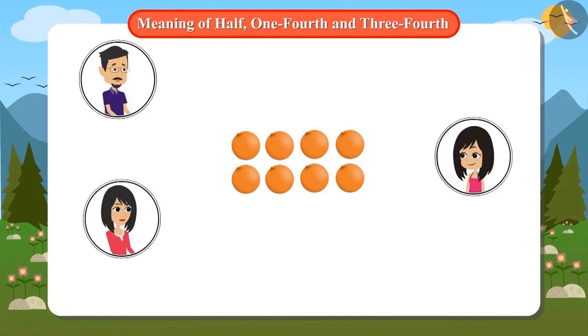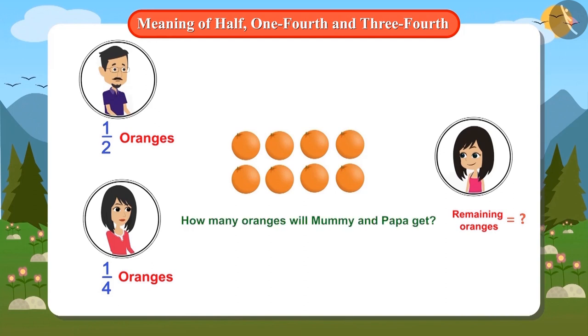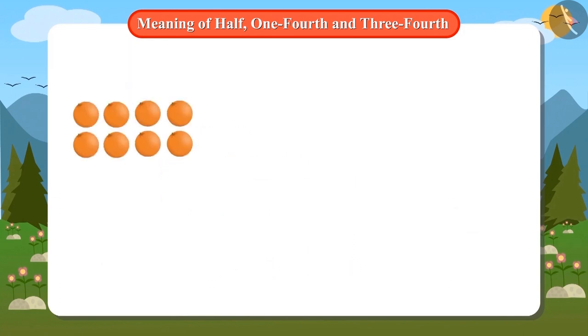Mummy tells Neha that out of these oranges, she will give half of the oranges to papa, keep one-fourth oranges with herself, and give the remaining oranges to Neha. Can you guess how many oranges will Neha get? To find out how many oranges will Neha get, we first have to find out how many oranges will mummy and papa get. That is, we have to add half and quarter of total oranges.